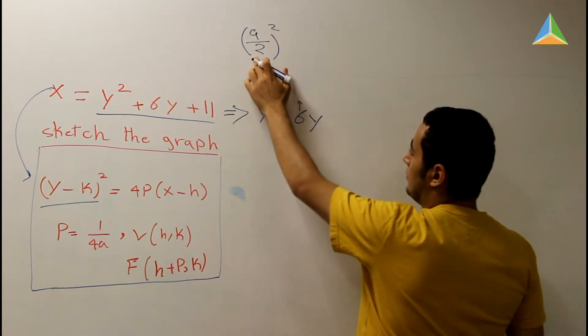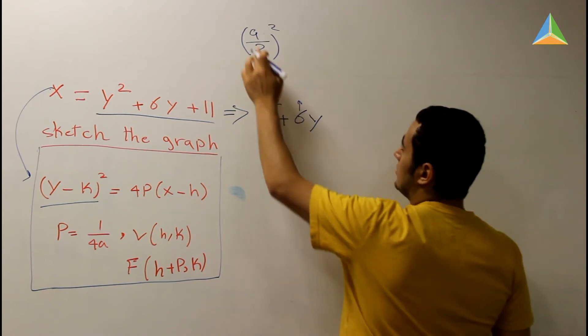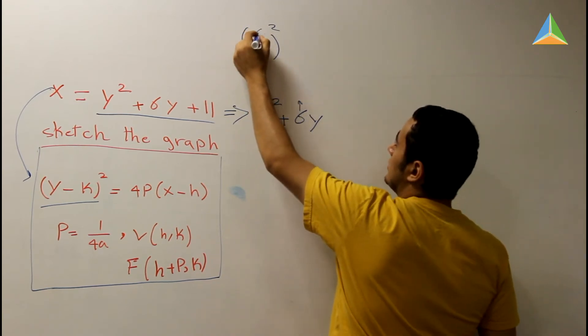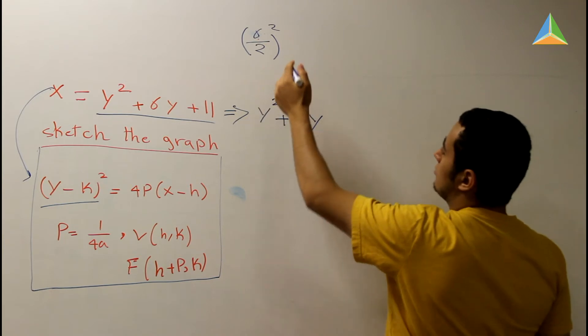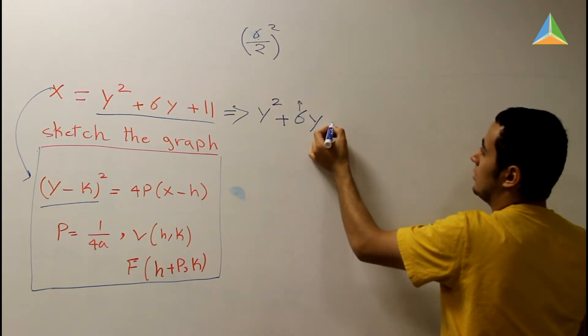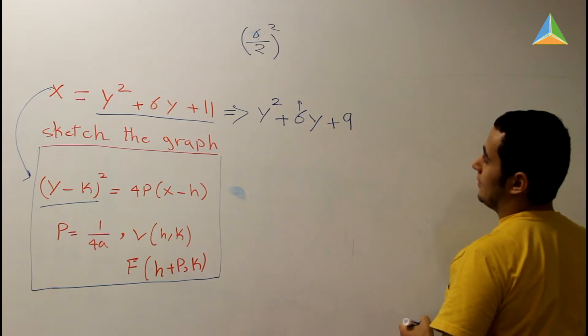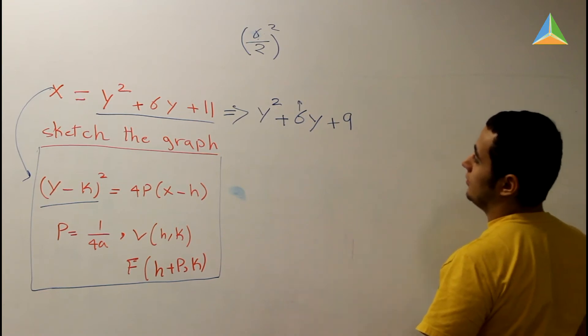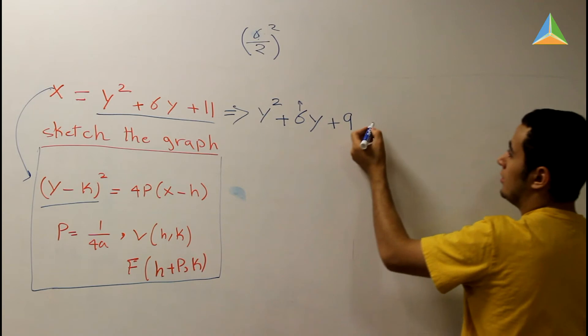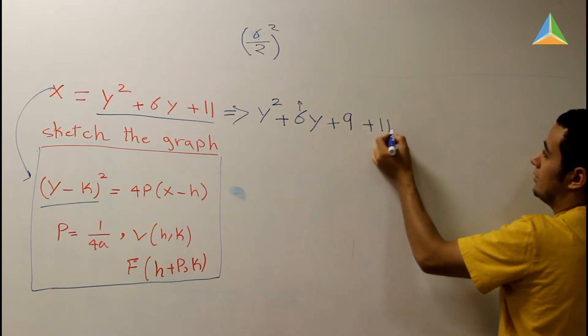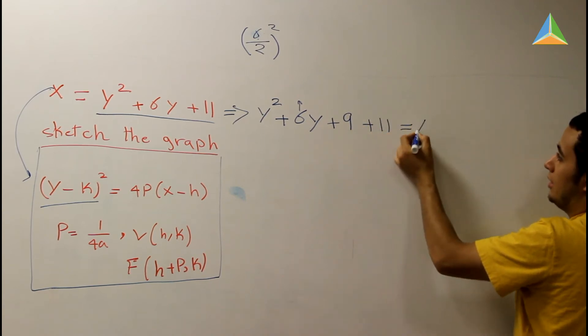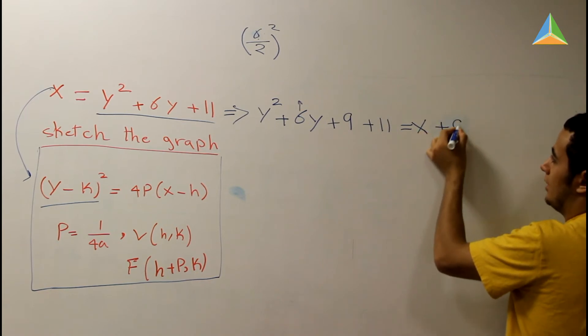We have 6 right here, so we're going to write 6. 6 divided by 2 is 3. 3 squared is 9. So it's going to be plus 9. Now we completed the square.